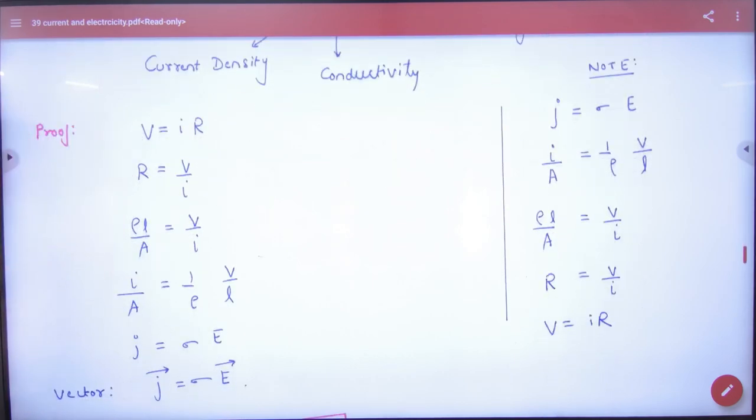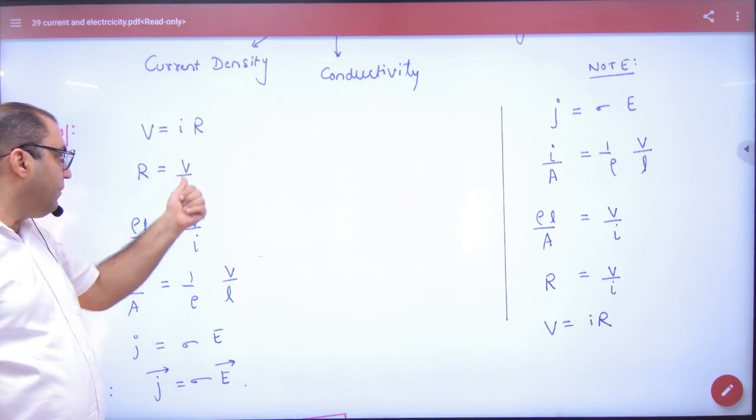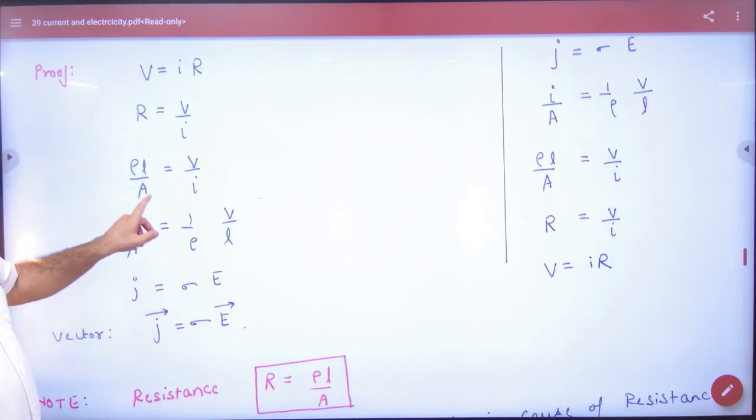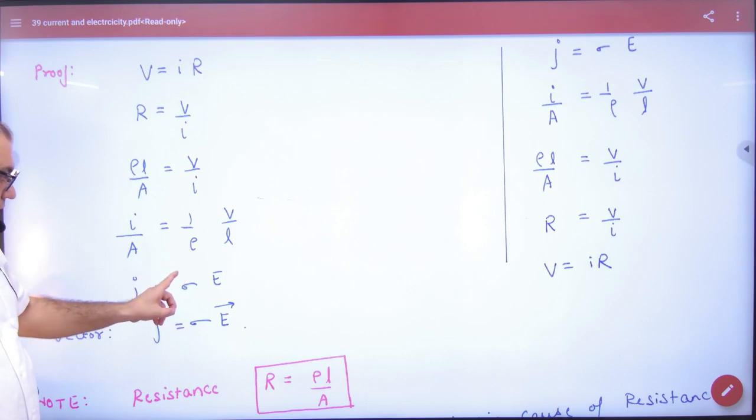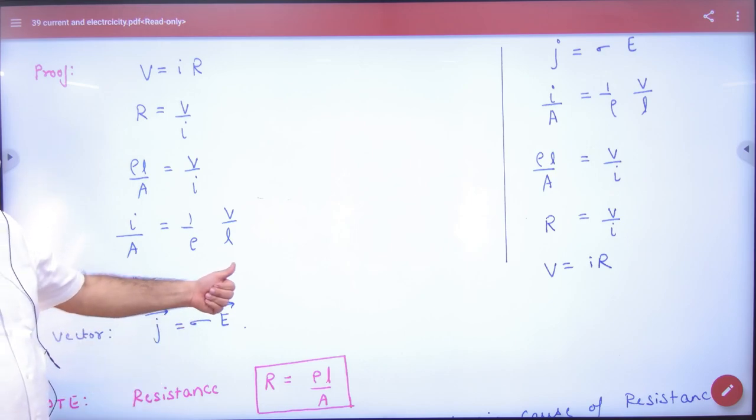V is equal to IR. So here, R is V by I. Resistance we did: Rho L by A. Here, so current by area, current by area, what is? Current density J. One by Rho, what is? One by resistivity is conductivity. V by L, what is? E. Vector form: now comes E vector and here J vector. Answer.